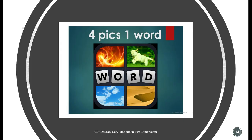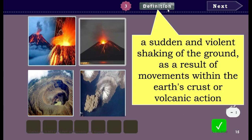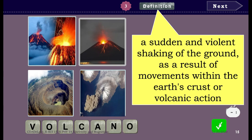Before we begin, let's play Four Peaks — one word. Ready? So for this set of pictures, you can see volcano, magma, craters. The definition is: it is a sudden and violent shaking of the ground as a result of movement within the earth's crust or volcanic action. What do you think is the answer? Volcanoes.